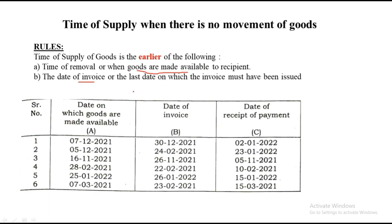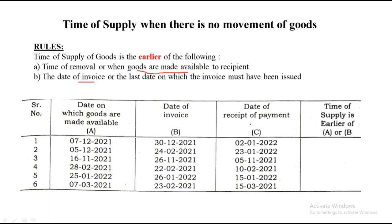The key is 'goods made available.' If you look into a question, the serial numbers given include date on which goods are made available — this is the key one. The moment you see 'goods are made available,' understand this is a sum where there is no movement of goods. We have been given the date when the goods are made available, date of invoice, and date of payment. To identify the time of supply, the rule is: date when goods are made available or invoice, whichever is earlier. We have to compare between these two — A and B — and whichever is the earlier date becomes your time of supply.